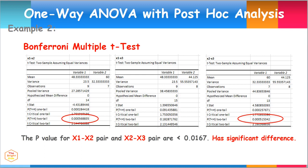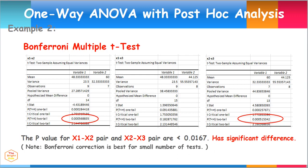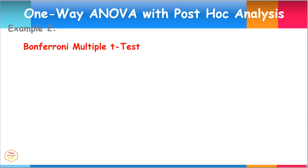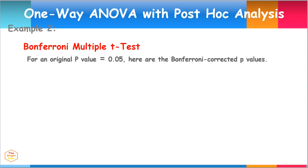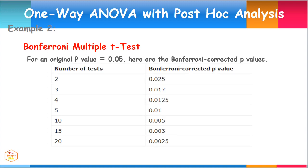Also take note, the Bonferroni correction is best for a small number of tests, since having more tests would increase the Type II error rate using the Bonferroni test method. Here is the list of Bonferroni corrected P values for multiple t-test analysis when the original P value used is equal to 0.05.